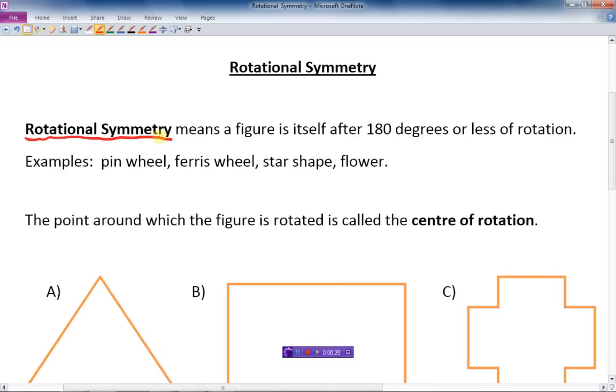Examples of this would be a pinwheel, ferris wheel, star shape, or many kinds of flowers have rotational symmetry as well.